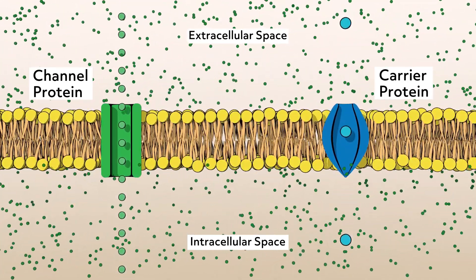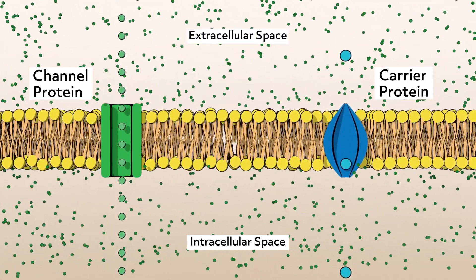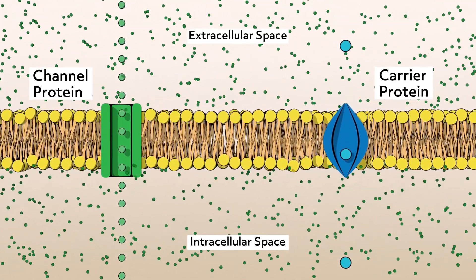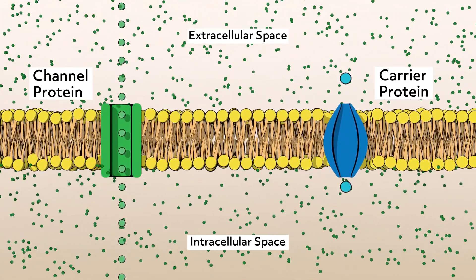Some channels are always open, while others are gated, opening and closing in response to a cellular signal. Consequently, unlike in normal diffusion, an equal concentration inside and outside of the cell is not always reached through facilitated diffusion, which is beneficial as this allows for more control over the concentration of substances inside the cell.